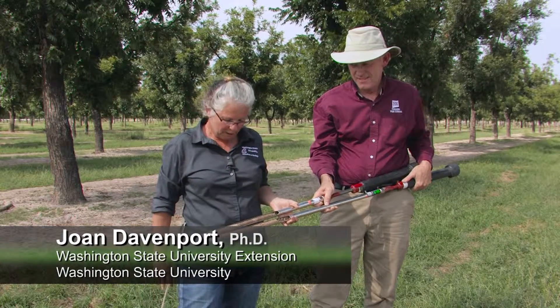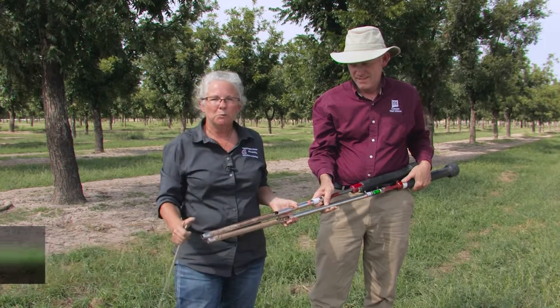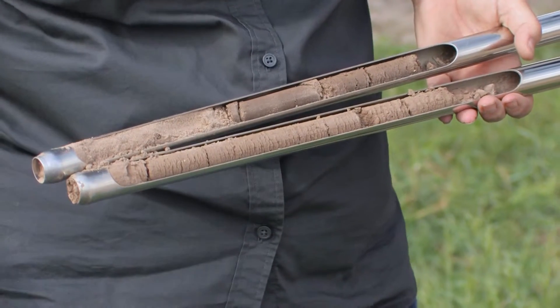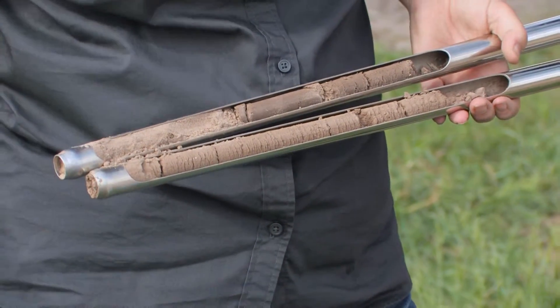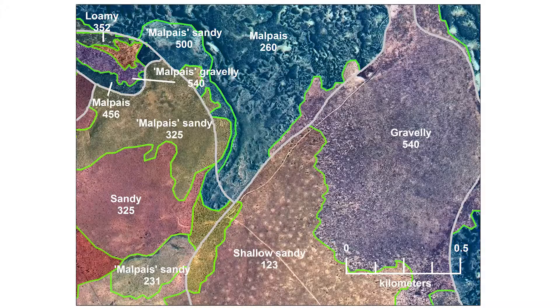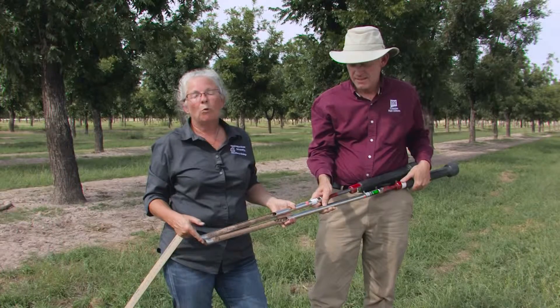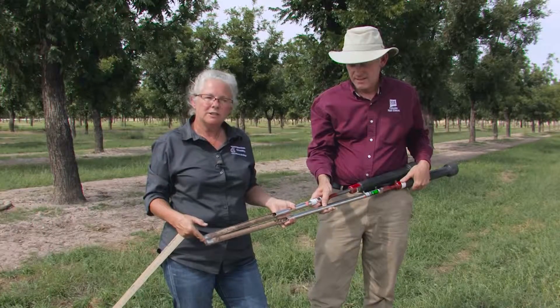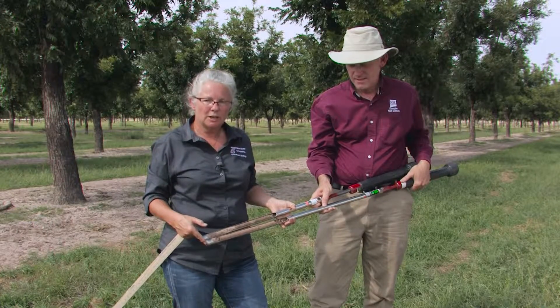What we have here really nicely demonstrates some of the variability we will see in soil sampling. One of the things that's very important in soil sampling is to look at a map of your soil before you go out to see if the field you're sampling in is uniform or has different soil types.